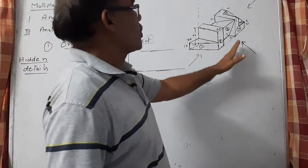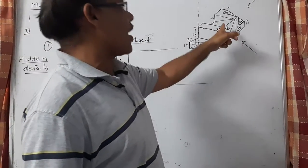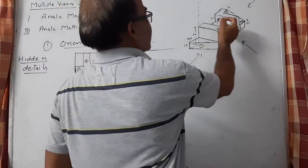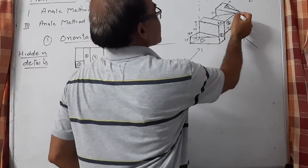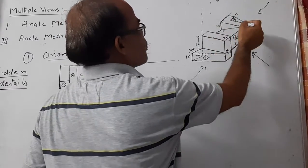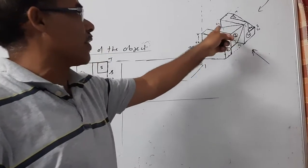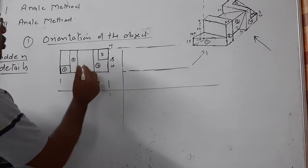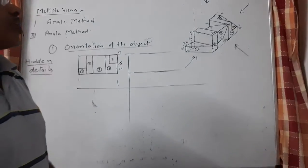If you see this, there are certain lines or details which are there but from this side they are not visible. For example, this line which is starting from this point is going through the width, total depth of the object and down by 24. So this line is there but it is not visible over here. This detail has not been shown over here, so it needs to be shown. How can that be shown?